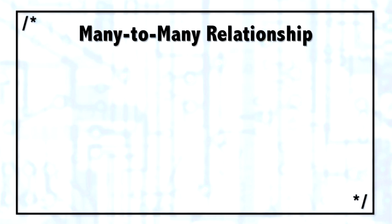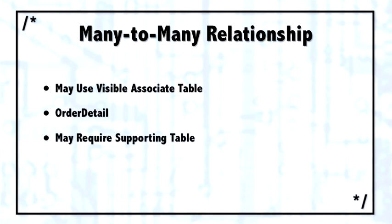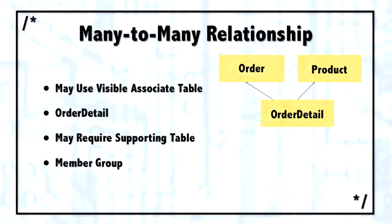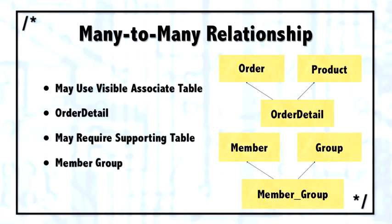The second most common relationship is a many-to-many relationship. Sometimes in a many-to-many relationship, that connection between the two is an obvious table that most users or business people would understand. For example, between order and product, most people understand there has to be some kind of detail row that connects an order with a product. However, sometimes that supporting table is going to be difficult to be understood by the average business user.